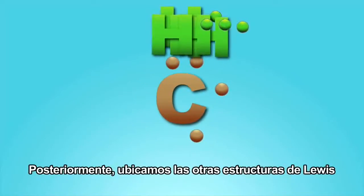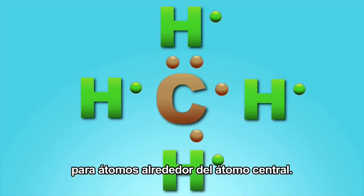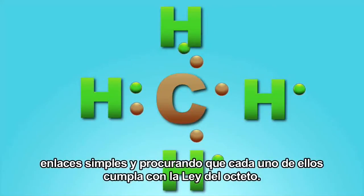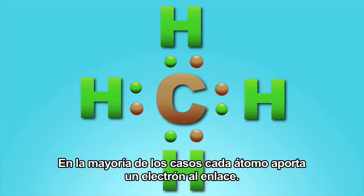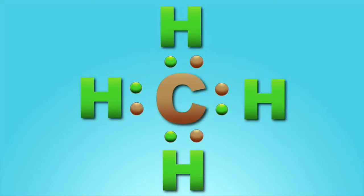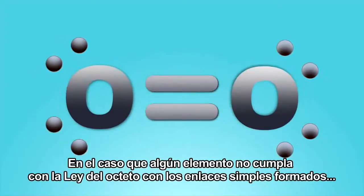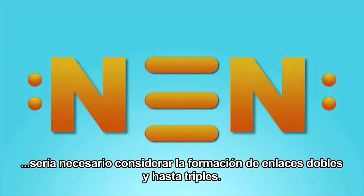Posteriormente, ubicamos las otras estructuras de Lewis para átomos alrededor del átomo central. Luego se distribuyen los electrones de manera que puedan formar, inicialmente, enlaces simples, procurando que cada uno de ellos cumpla con la ley del octeto. En la mayoría de los casos, cada átomo aporta un electrón al enlace. En caso de que algún elemento no cumpla con la ley del octeto con los enlaces simples formados, sería necesario considerar la formación de enlaces dobles y hasta triples.